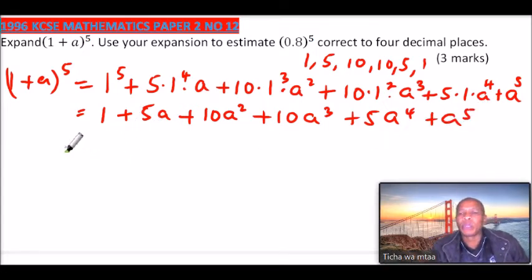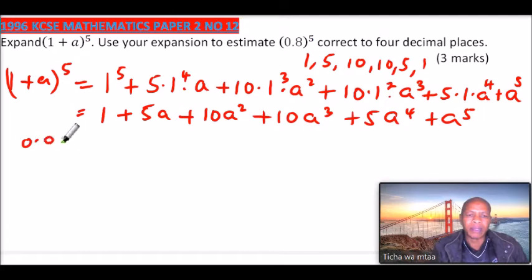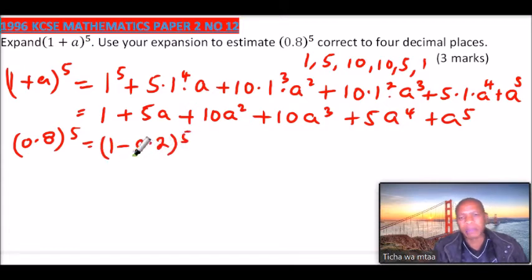So we can now use this to expand this. (0.8)^5 is the same as (1-0.2)^5. That is, 1 minus 0.2 is the same as 0.8, so we have not changed our expression. Therefore we can now use the expansion here. In this case, the value of a will be replaced by -0.2.